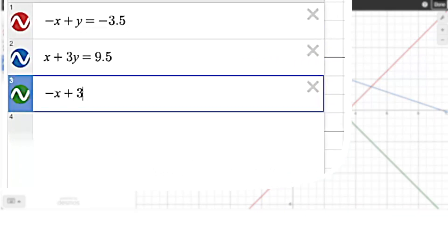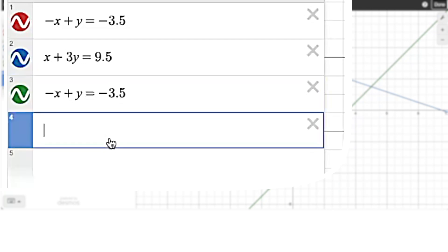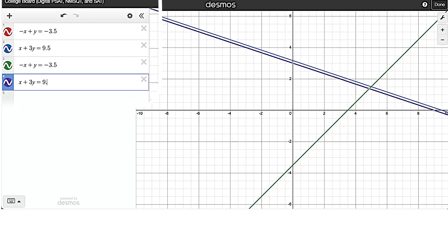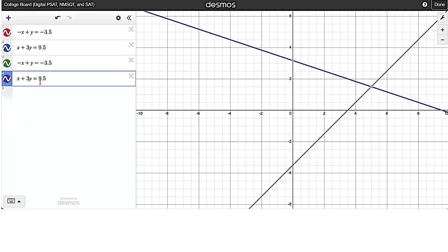Negative x plus 3 plus y equals negative 3.5. X plus 3, y equals 9.5. So it takes a few seconds. I was going pretty slow, too. If you get faster at this, you can definitely knock these out really quickly.